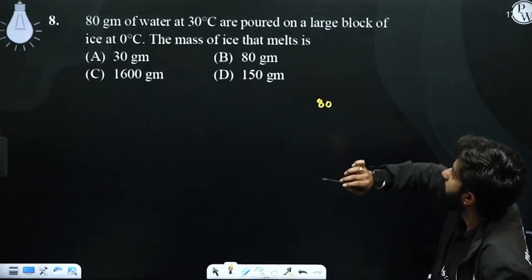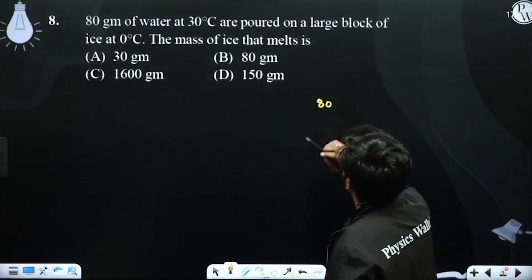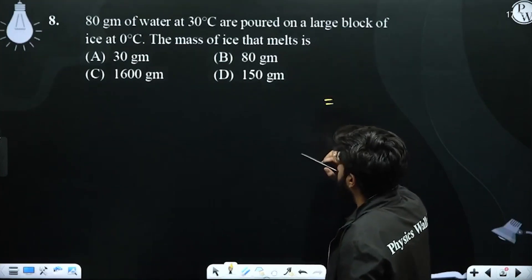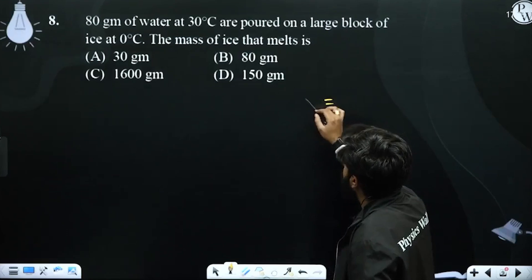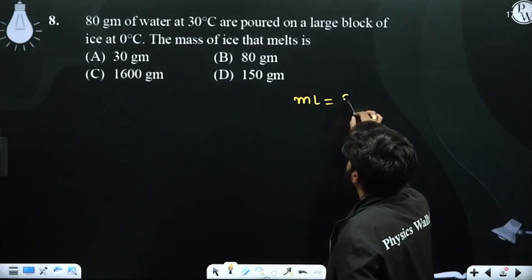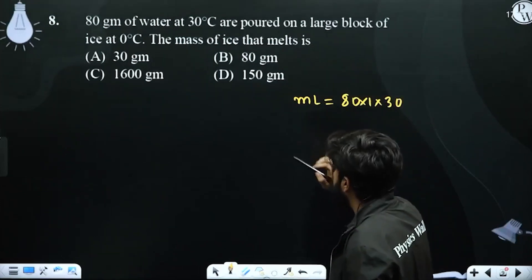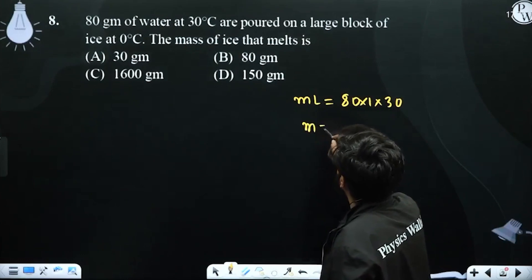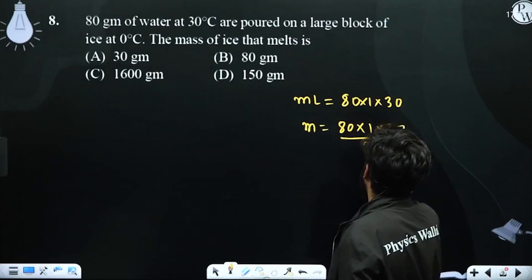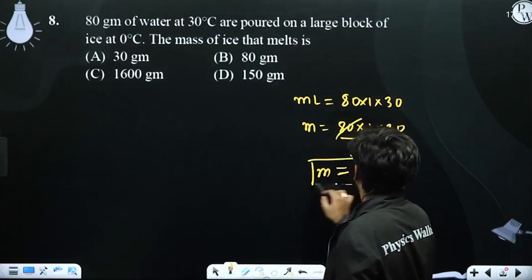80 grams of water — where is the mass of the ice melting? 30 grams will melt.